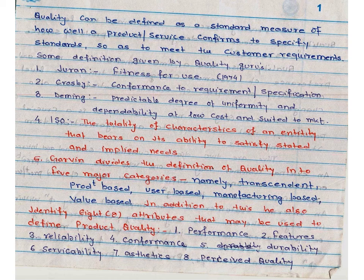As per ISO, quality is the totality of characteristics of an entity that bears on the ability to satisfy stated and implied needs. Garvin divides the definition of quality into five major categories: namely the transcendent, product-based, user-based, manufacturing-based, and value-based.